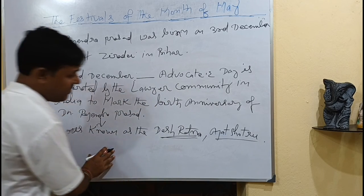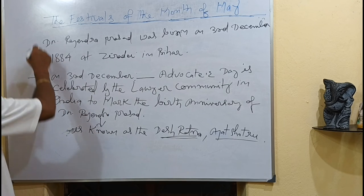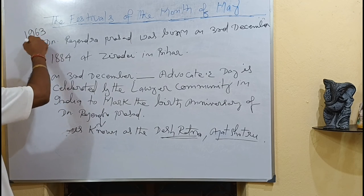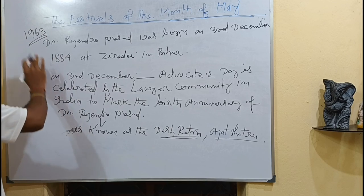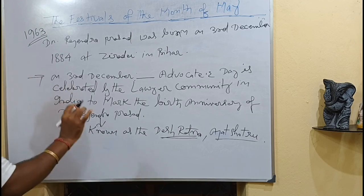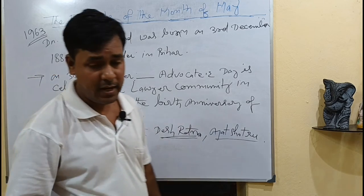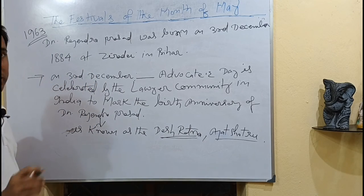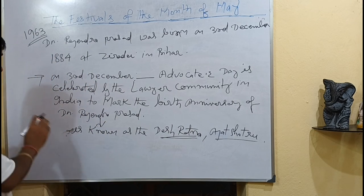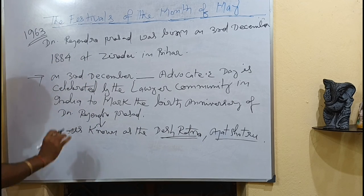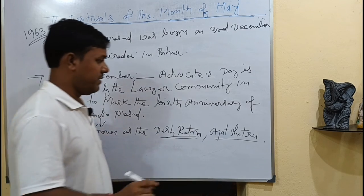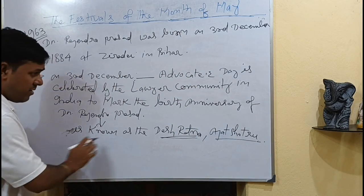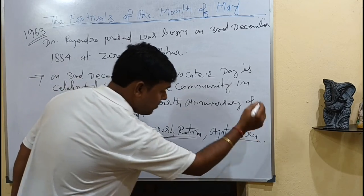That is all from the year 1963. In that year, the peacock was declared the national bird of India, Nagaland became a state of India, and the first President Dr. Rajendra Prasad passed away. Dr. Rajendra Prasad is known as Desaratan and Ajat Satru.